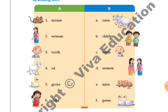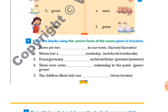Next exercise: Fill in the blanks using the correct form of the nouns given in brackets. First sentence: 'There are two ___ in your town.' Is it 'factory' or 'factories'? Because 'there are two' means more than one, the answer is 'factories'.